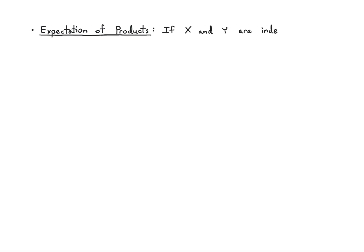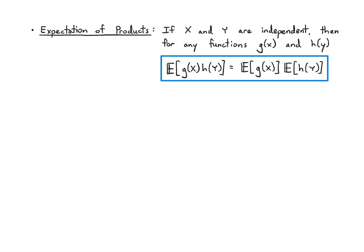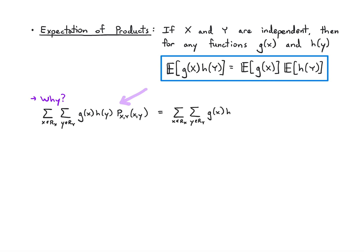Here's one case where independence does matter. Let's say you have a product of functions and you want to take the average — expectation of products. If I have independence, then I can factor the product. So if I have functions g(x) and h(y) and I take the average of g(x) times h(y), I can write that as the average of g(x) times the average of h(y), so long as they're independent. The reason is that when I write down this average, I have the joint PMF, and due to independence I can factor that joint PMF into the product of the marginal PMFs, and then reorganize the sum to get the two expectations.